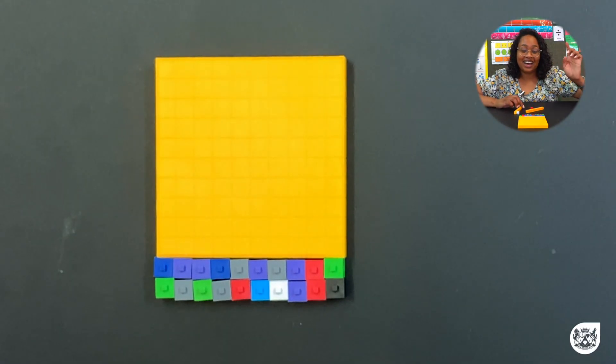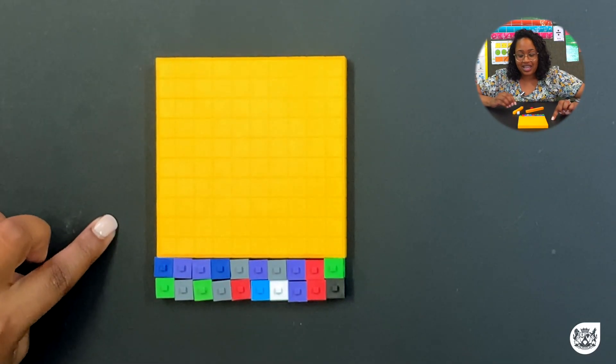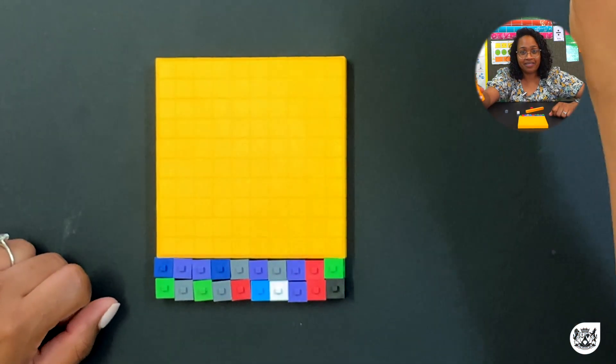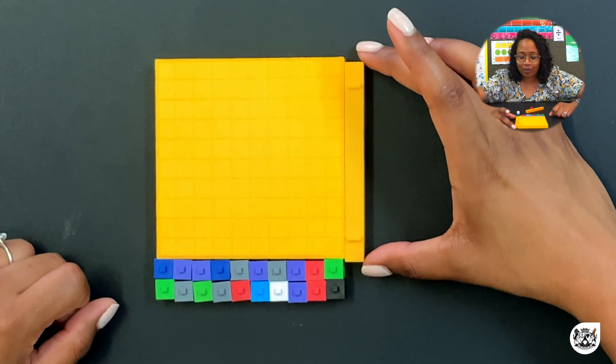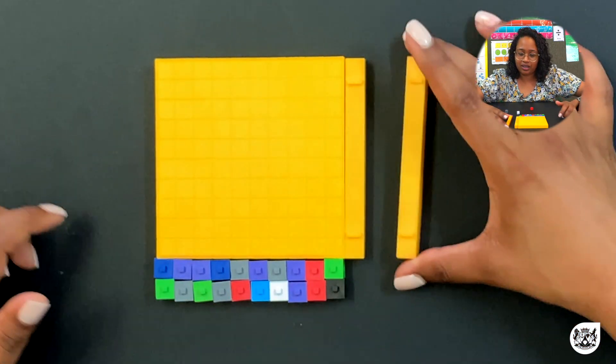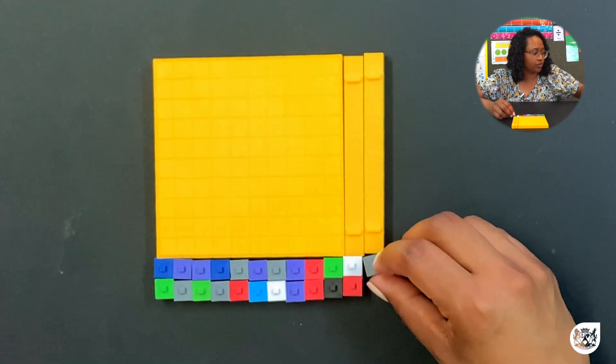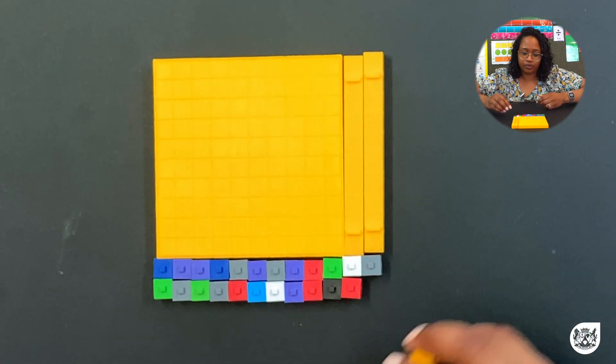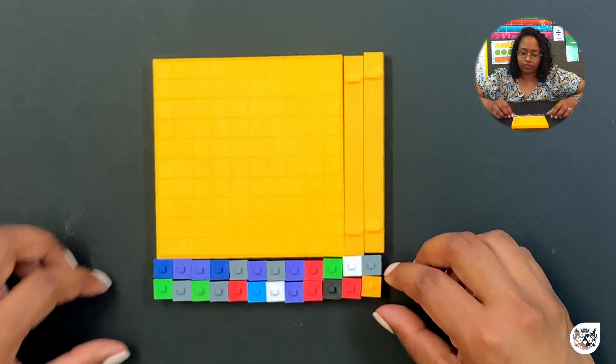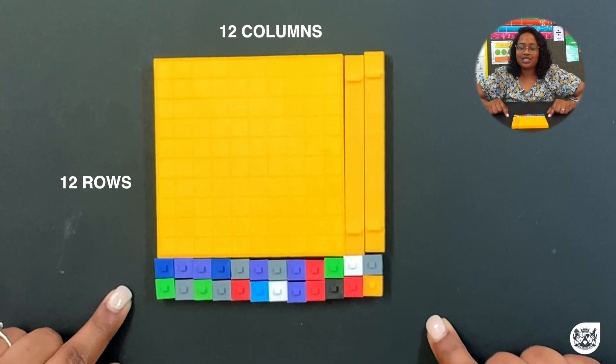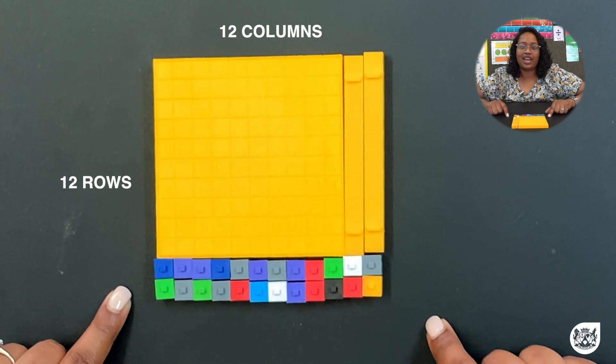So now we've got our 12 rows and we'll use our 10s rod to fill up our 11th and 12th column. So 12 by 12 gives us a product of 144.